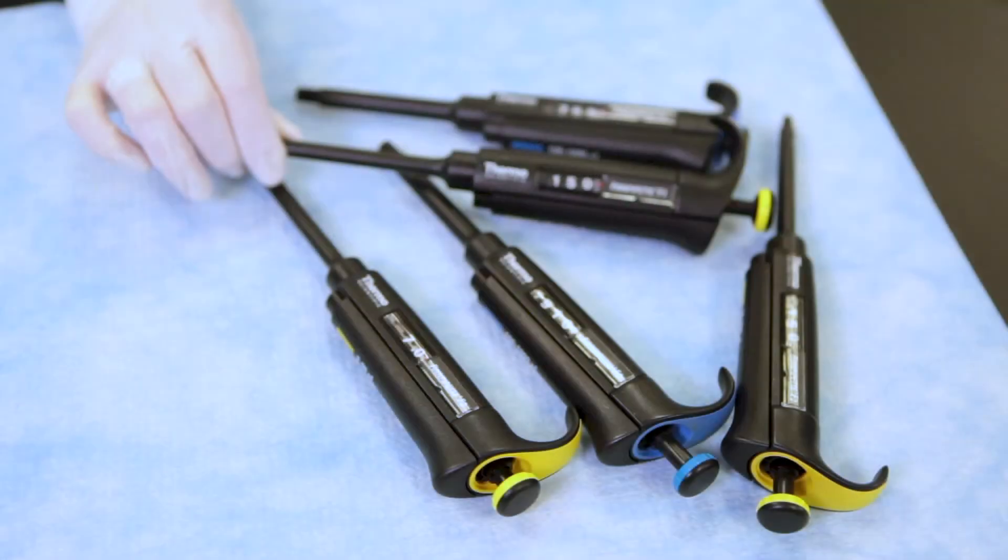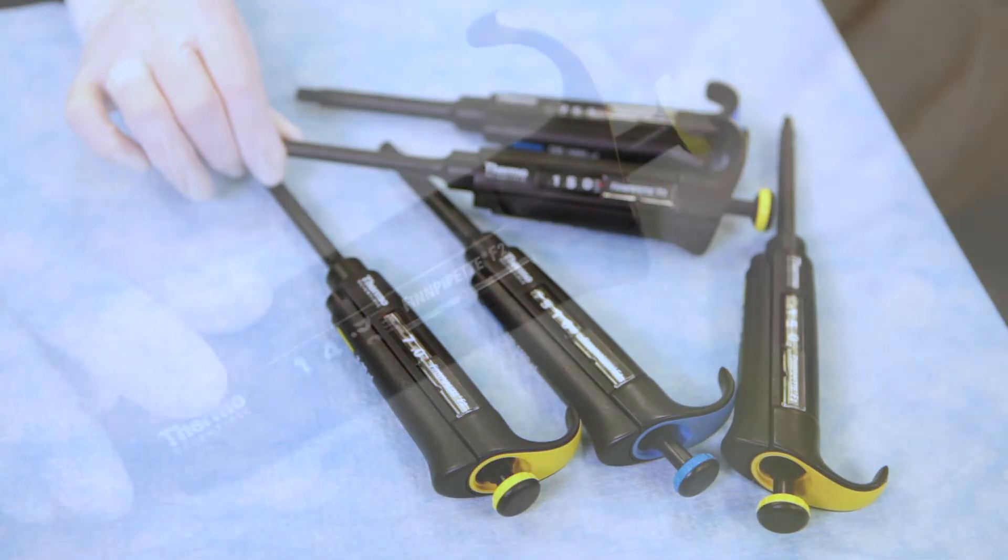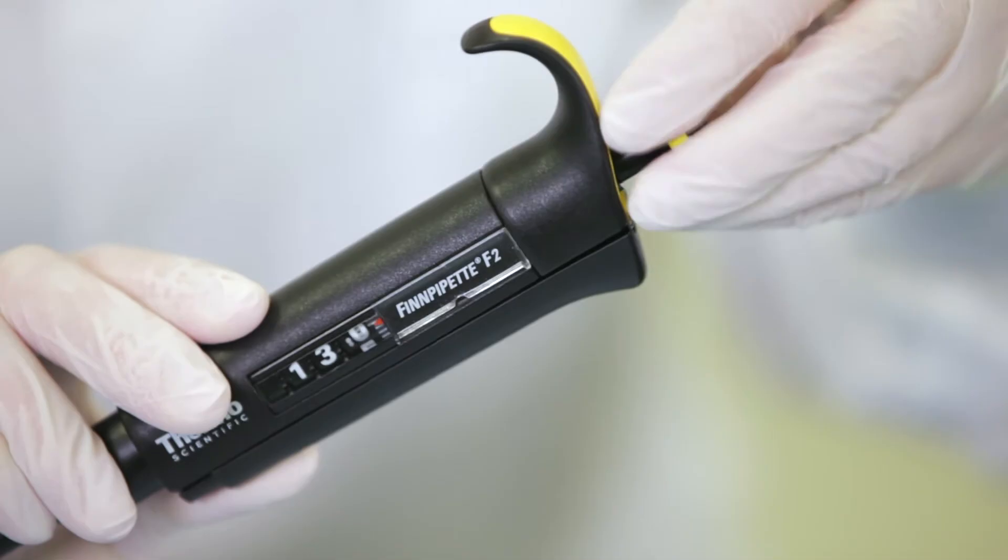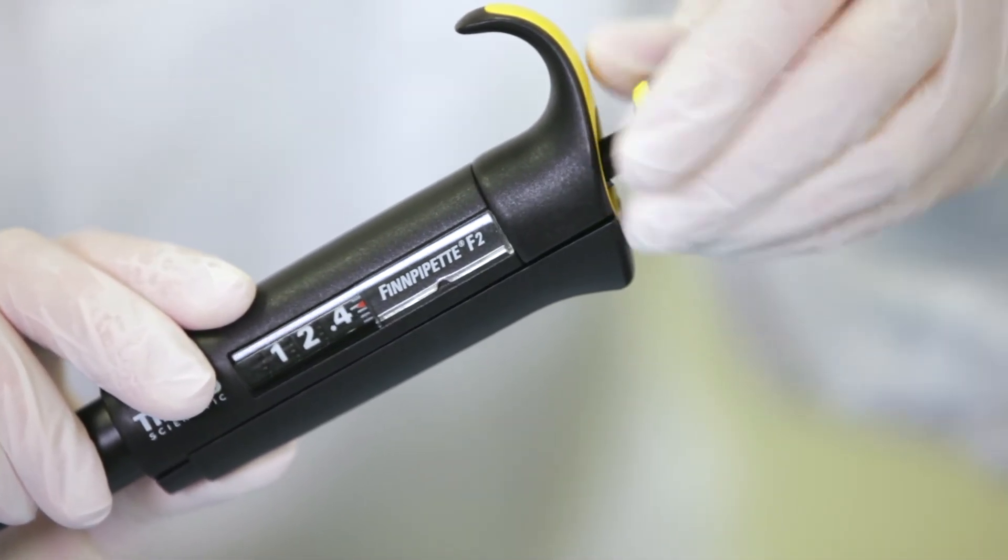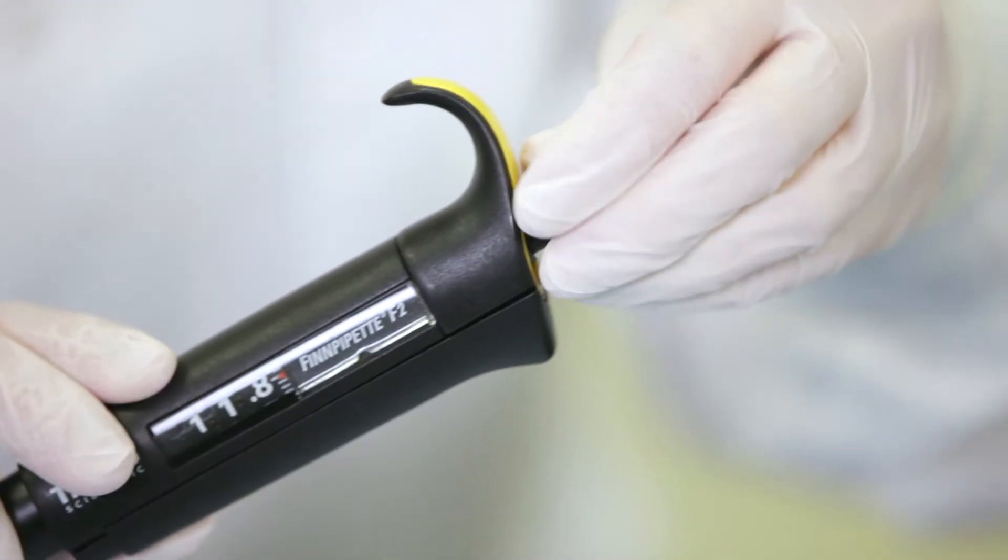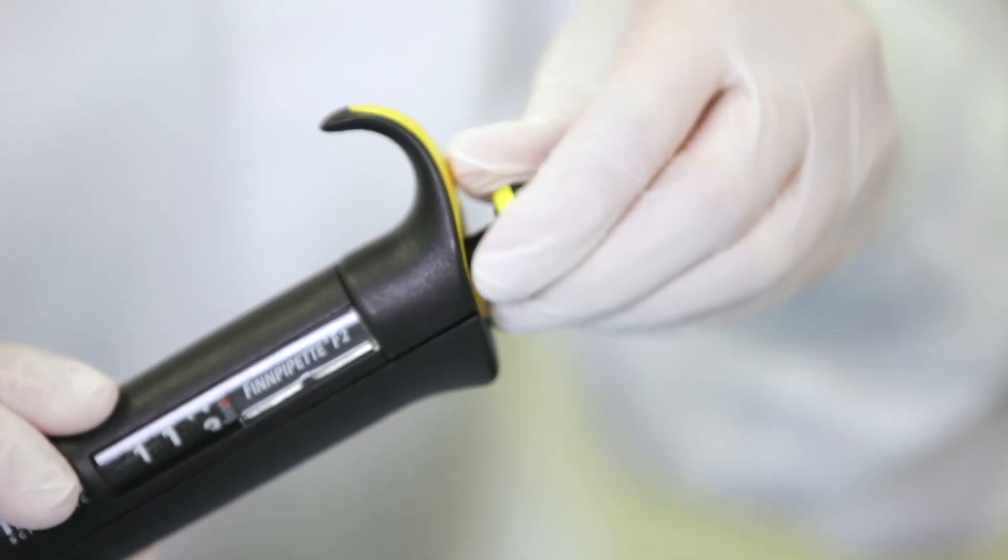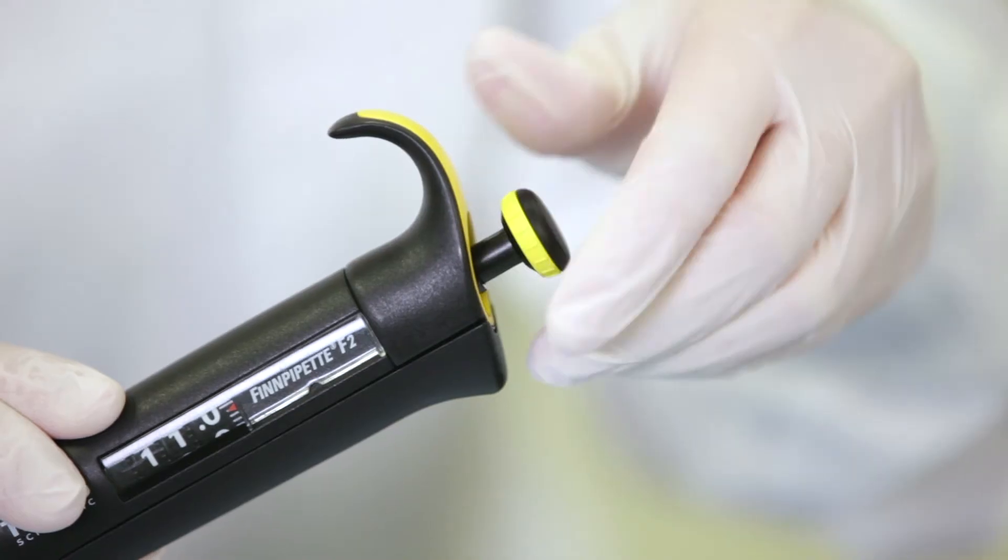Pipettes are used along with plastic disposable pipette tips to measure or transfer small amounts of liquid, usually from 0.2 microliters to 1,000 microliters or 1 milliliter. The range of volume an individual pipette measures is typically printed on the handle. The volume of the pipette can be adjusted by rotating the volume adjust knob to the desired volume.